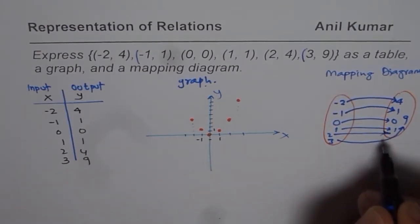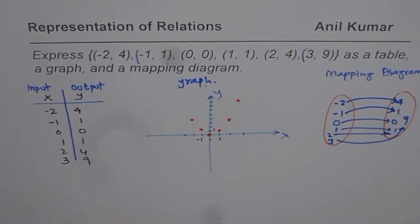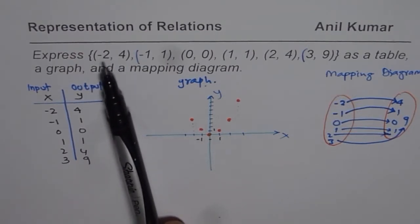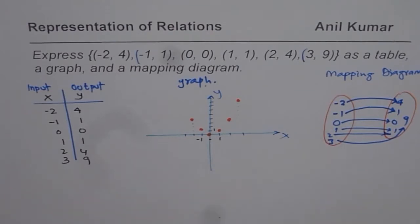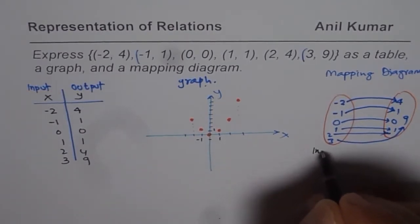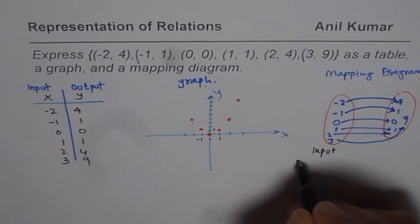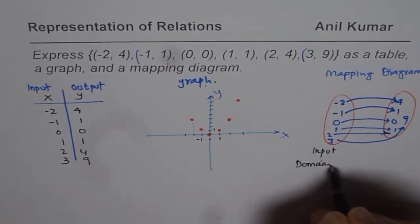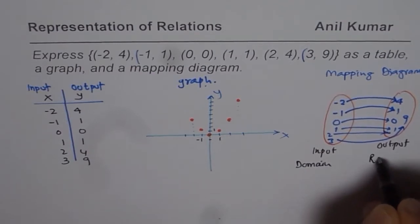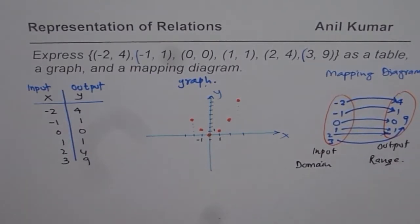That is how you can represent the same data in the form of a mapping diagram. Each element on the left side — the x values — becomes the input, representing the domain. The right side is the output, representing the range of the given relation.